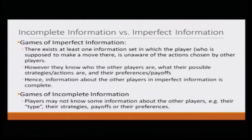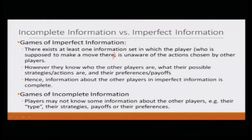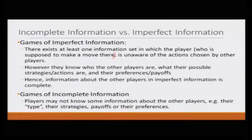What did we see? If there exists at least one information set in which the player who is supposed to make a move is unaware of the action chosen by other players — however, all the players know who the other players are, what are their possible strategies, what are their preferences and payoffs. The only thing they are not aware of is the actual move made by other players; they do not observe some of the moves made by other players. That comes into the category of games of imperfect information. To sum up, in the imperfect information case, information about other players is complete; the only unknown is the strategic uncertainty — the player does not know what action the other player has taken.